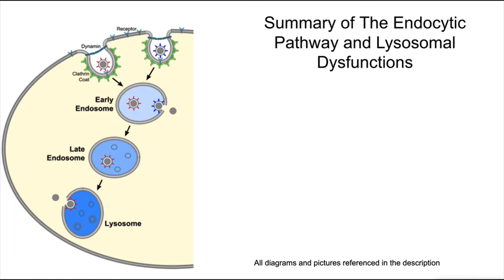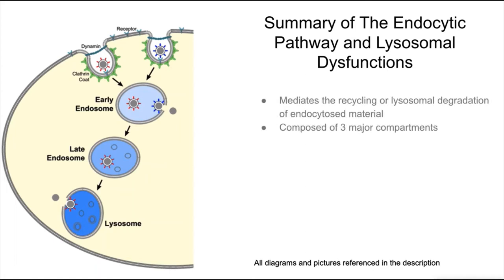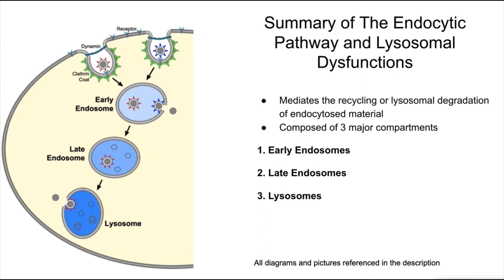This is a summary of the endocytic pathway, which is how the cell not only sorts the materials it takes up by endocytosis for either recycling or degradation, but the steps it takes to transport these materials to the lysosome, where they are enzymatically degraded. There are three distinct parts of the pathway: the early endosomes, the late endosomes, and the lysosomes. Although these organelles relate to each other in structure, they all have distinct functions, which are all crucial to the processing of endocytosed material. We will talk through each one in turn.